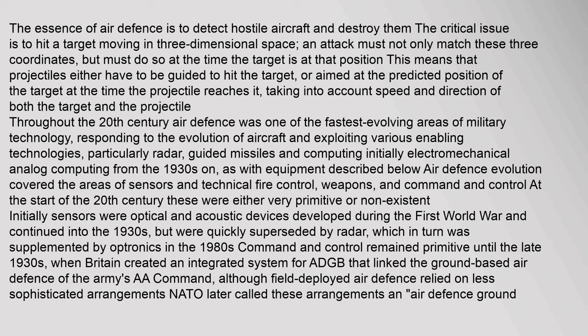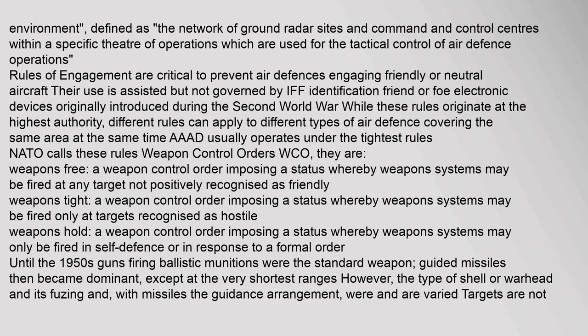Air defense evolution covered sensors and technical fire control, weapons, and command and control. Initially, sensors were optical and acoustic devices developed during the First World War, but were quickly superseded by radar, which was supplemented by optronics in the 1980s. Command and control remained primitive until the late 1930s, when Britain created an integrated system for ADGB linking ground-based air defense of the Army's AA Command. NATO later called these arrangements an air defense ground environment — a network of ground radar sites and command and control centers within a specific theater of operations.